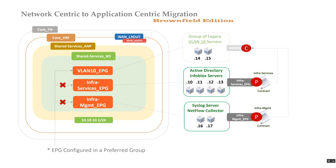You may wonder: what if the infra management endpoints need to communicate with Active Directory? Because we have VZ Any defined, the infra management EPGs are technically part of VZ Any — any endpoint group — and will be able to connect to Active Directory and Infoblox servers based on the infra services contract. So it works in that fashion as well.